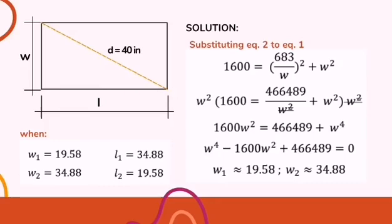The next and the last solution for this problem is substituting equation number 2 to equation number 1. So 1,600 equals 683 over width squared plus width squared. So para macancel natin yung width squared sa baba ng 466,489 is maglalagay tayo both sides ng width squared.